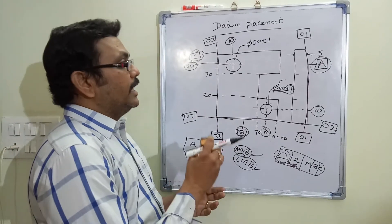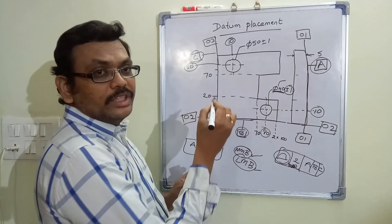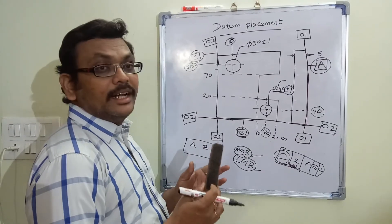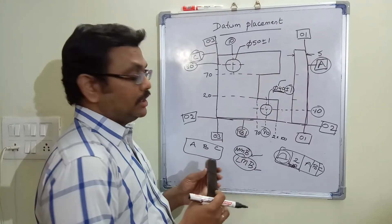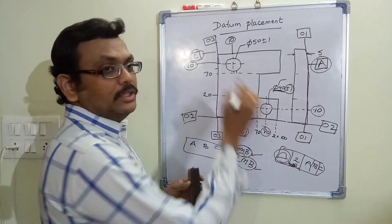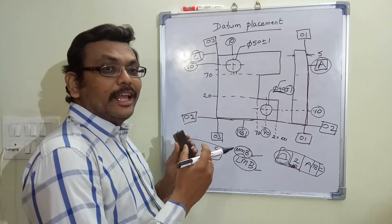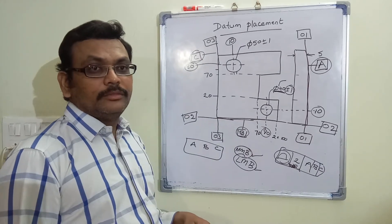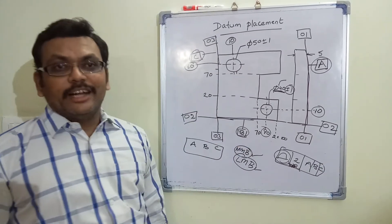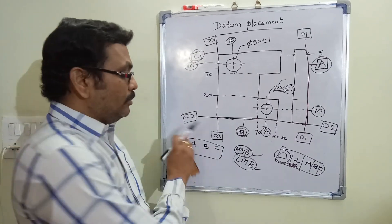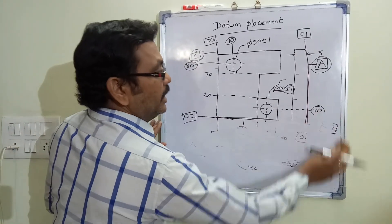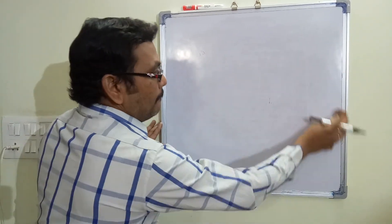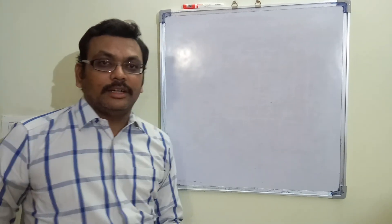In the next section, we will see about the feature control frame and what conditions arise if you take datums on features, as well as the different types of GD&T that we come across in the feature control frame. Hope you understand about datum placement. If you like this section, please subscribe, share, or comment. Meet you in the next section. Thank you.